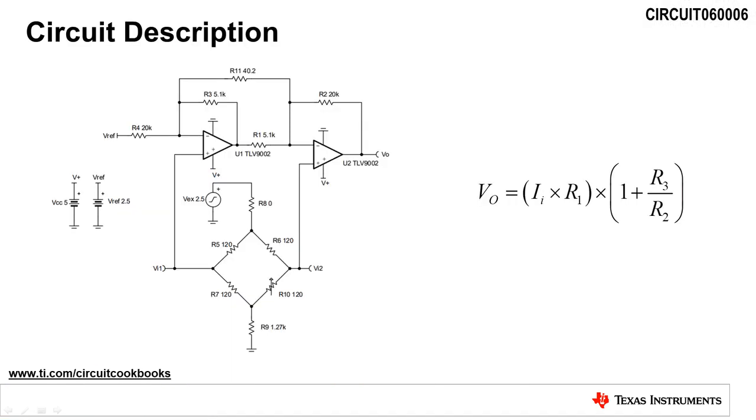This schematic represents a single supply strain gauge bridge amplifier. The resistance of a strain gauge is dependent on the force applied to it. As the resistance changes, a differential voltage across the bridge is produced, which then is amplified using a discrete 2 op amp instrumentation amplifier.